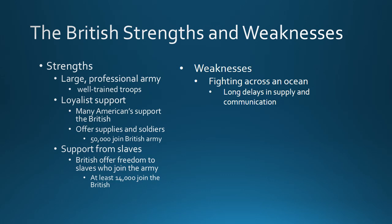However, the weaknesses of the British side were also very significant. First, the British were fighting across an ocean — 3,000 miles separated England from America — and this led to long delays in supply and communication. The British could receive an order that was three months old and no longer made any sense, and sometimes they would be dangerously low on basic supplies like gunpowder and food. They were also fighting in unfriendly territory, meaning they didn't know the terrain as well as the colonists and were at constant danger of sneak attacks.